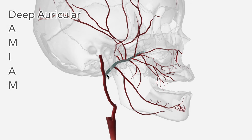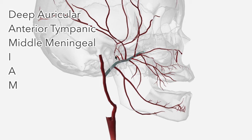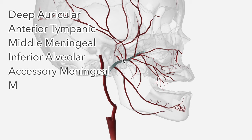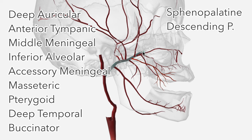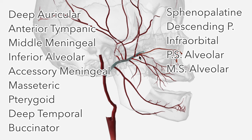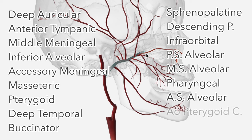First, the deep auricular artery, then the anterior tympanic. We have the middle meningeal artery, then the inferior alveolar artery. We have the accessory meningeal artery, then the masseteric artery. We have the pterygoid artery and the deep temporal — its anterior and posterior branches. We then have the buccinator artery, then the sphenopalatine, the descending palatine artery, the infraorbital, the posterior and middle superior alveolar arteries, the pharyngeal, anterior superior alveolar, and the artery of the pterygoid canal.